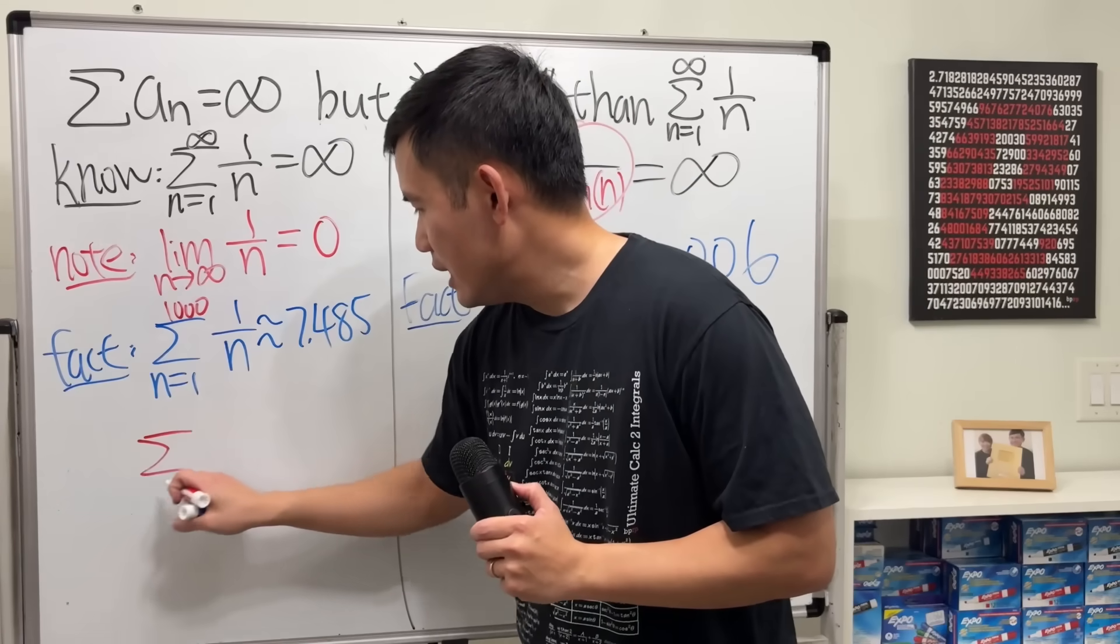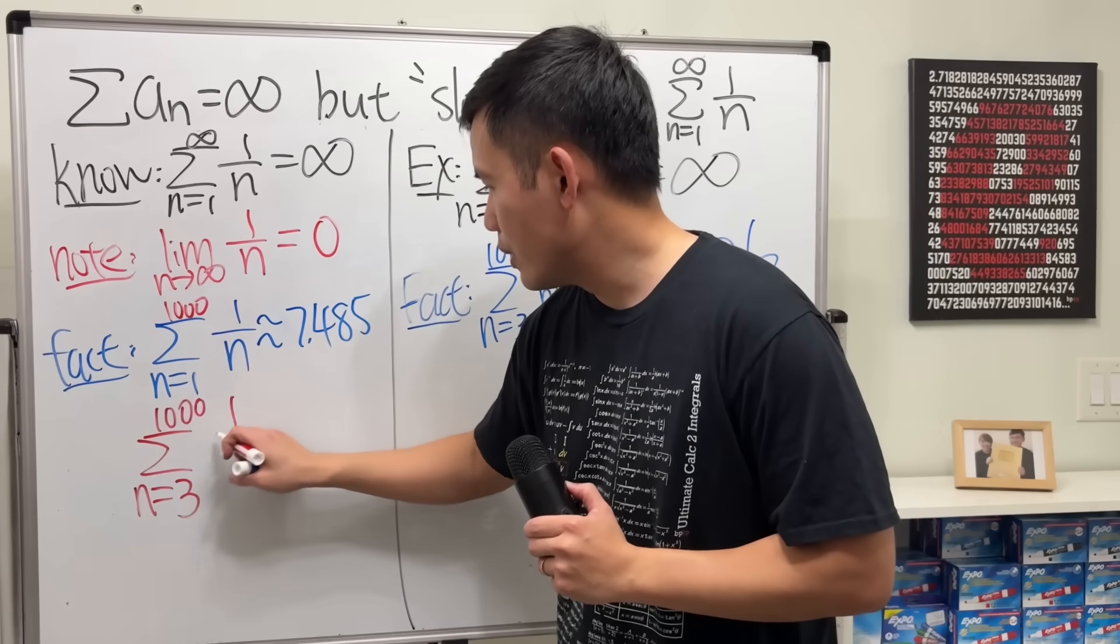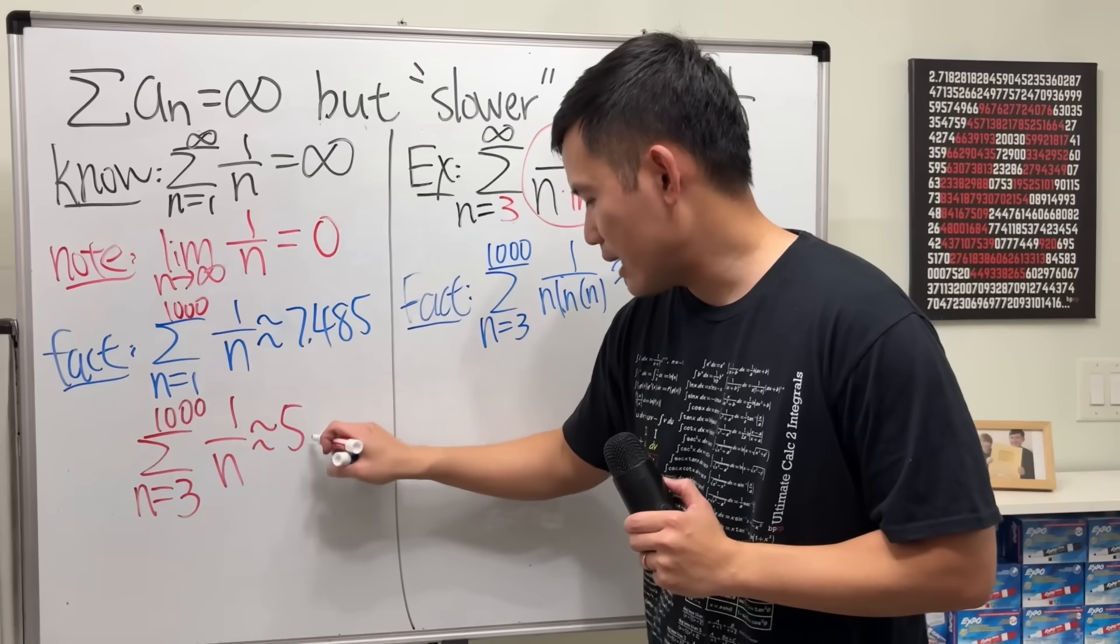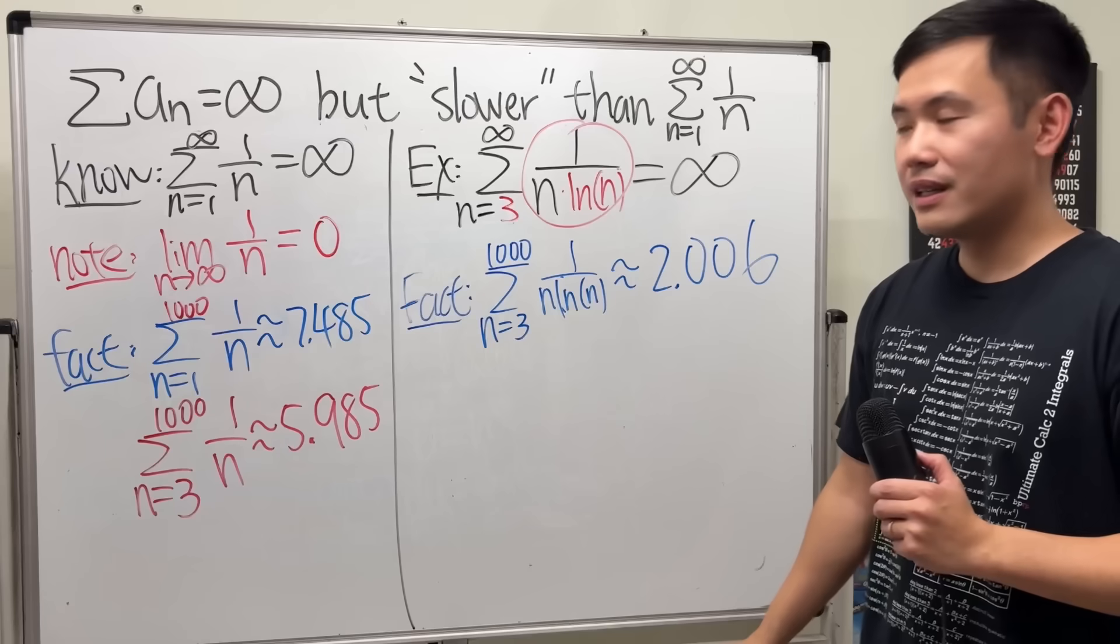So I will also write this down. If we only go from 3 to 1,000 of 1 over n, this right here is approximately 5.985, just subtract 1.5 from here. Yeah...